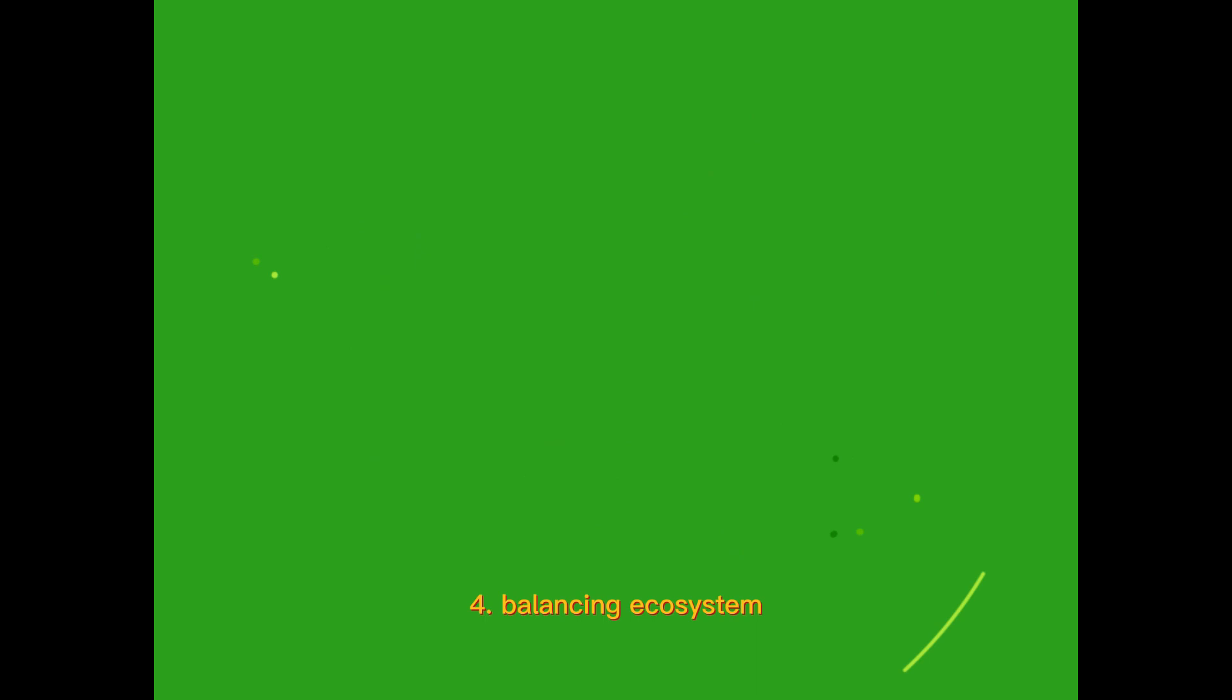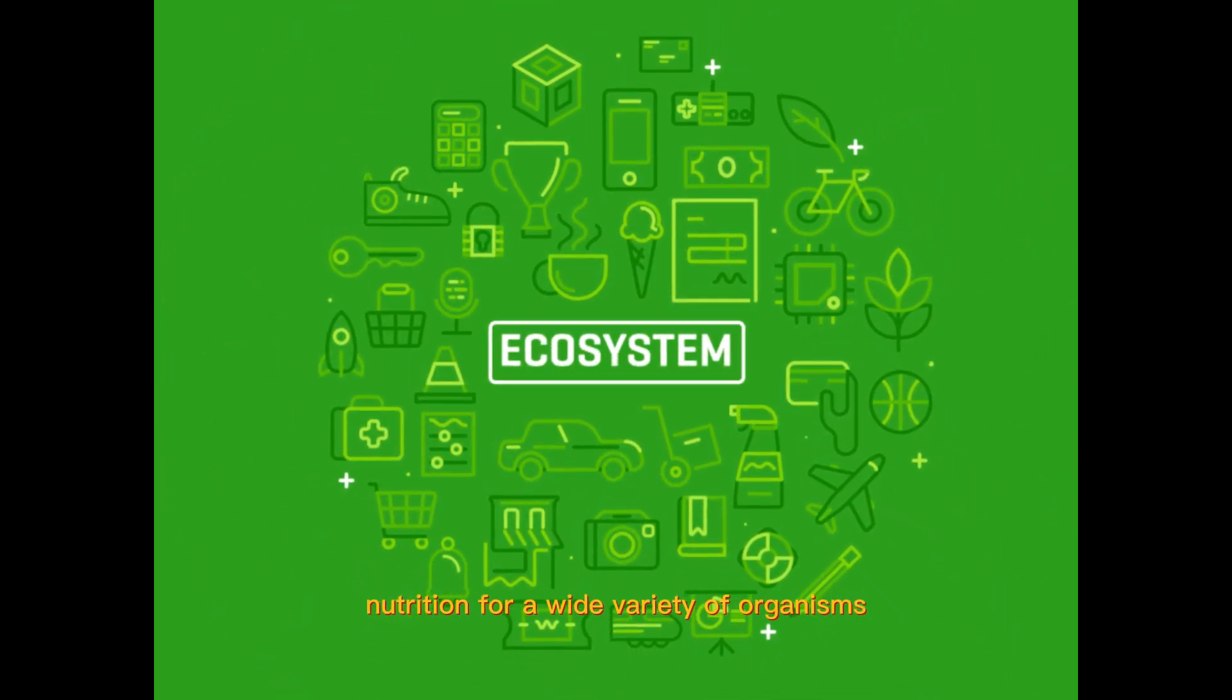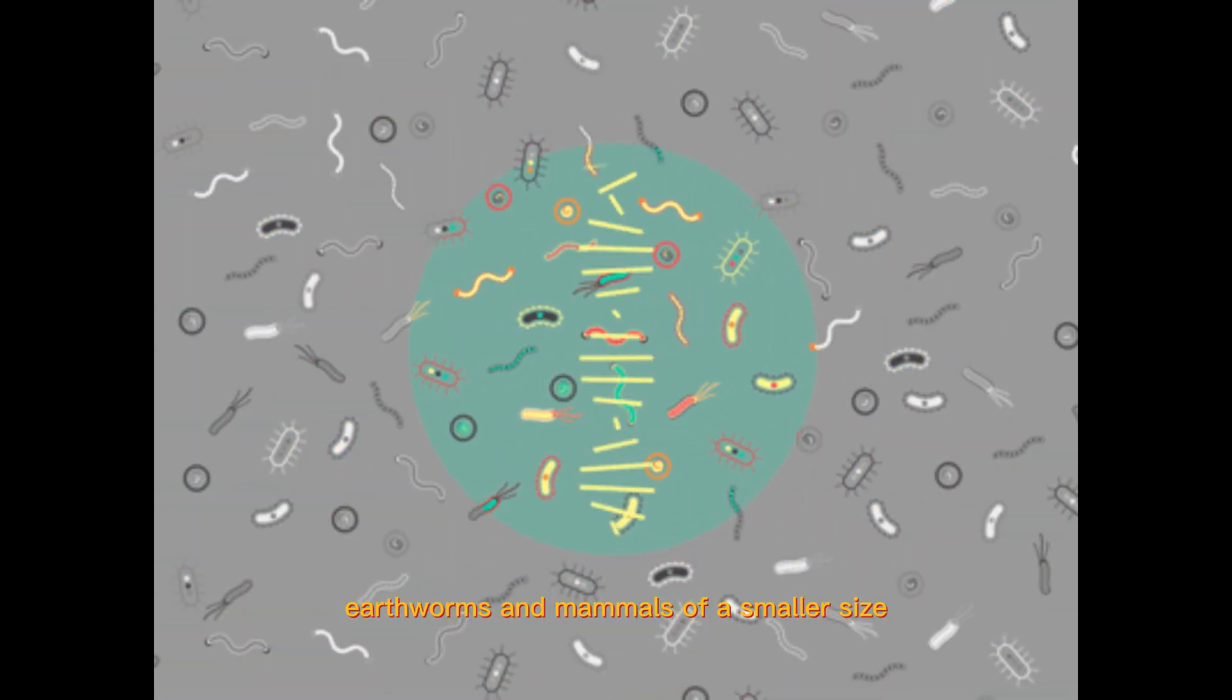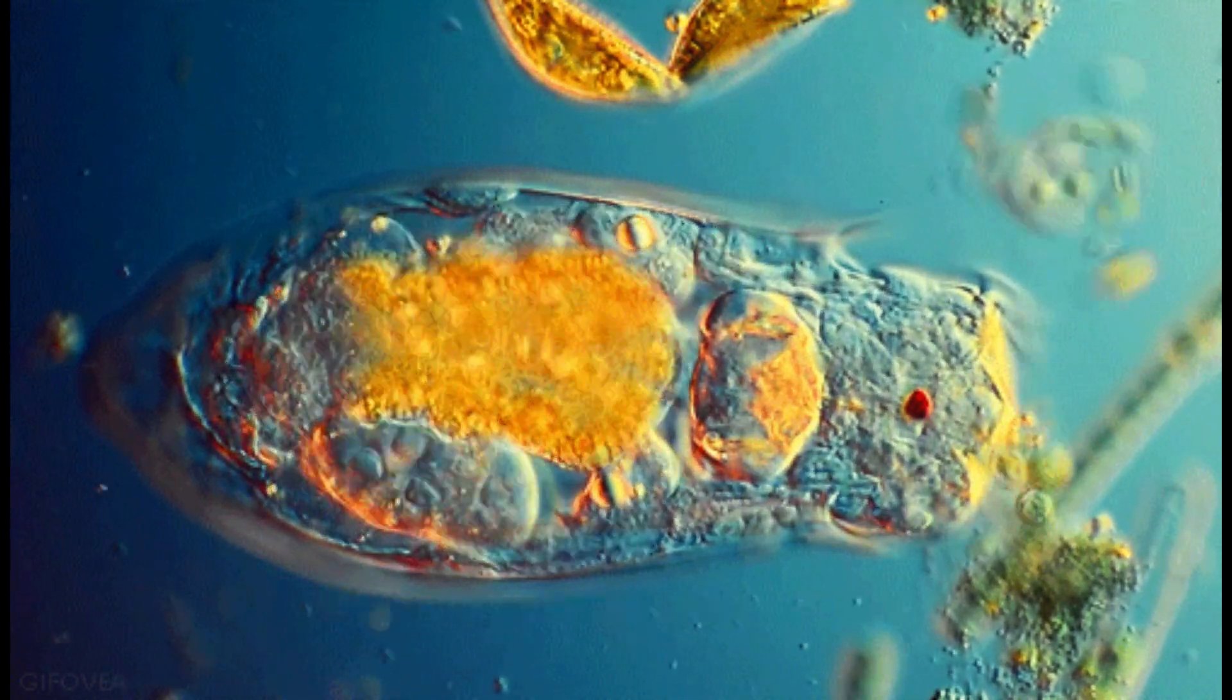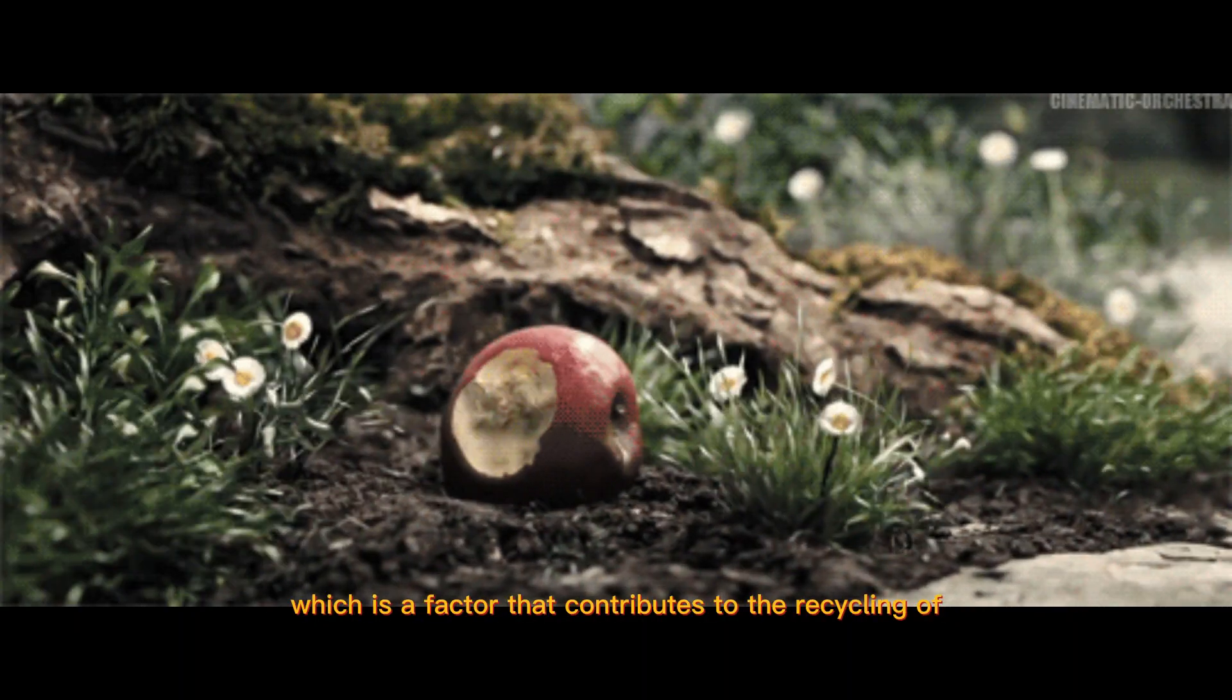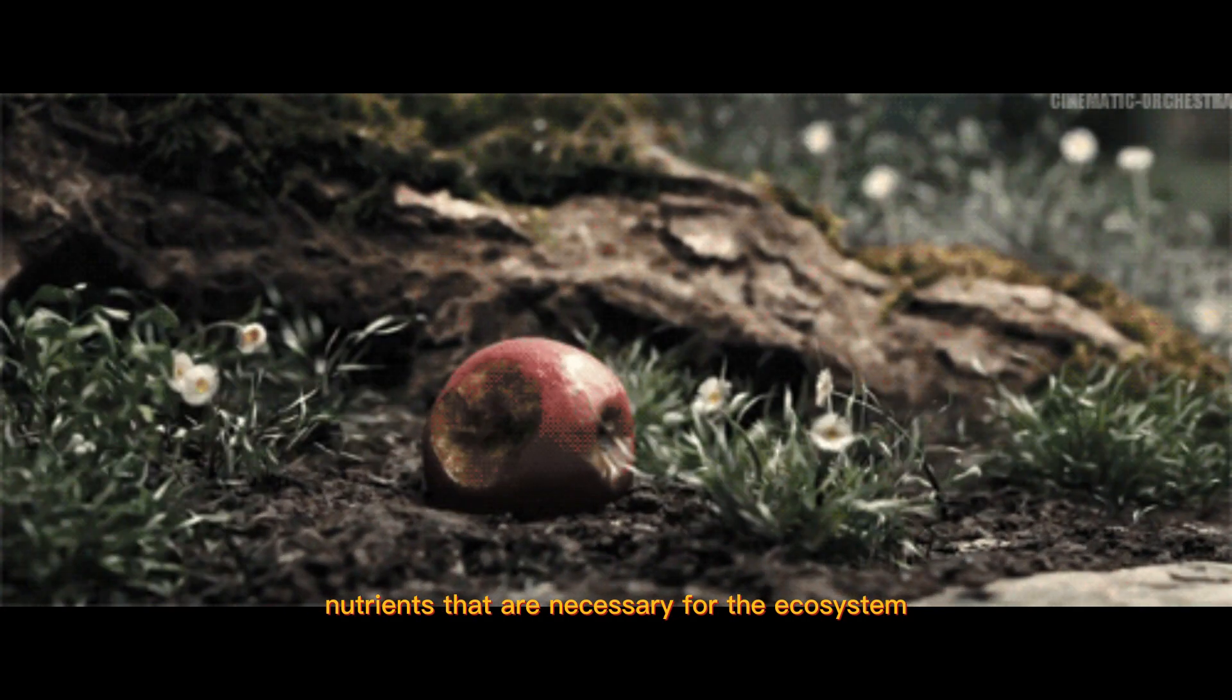4. Balancing ecosystem. Microbes are an essential source of nutrition for a wide variety of organisms, including insects, earthworms, and mammals of a smaller size. In addition to this, they assist in the breakdown of the waste that is left behind by animals, which is a factor that contributes to the recycling of nutrients that are necessary for the ecosystem.